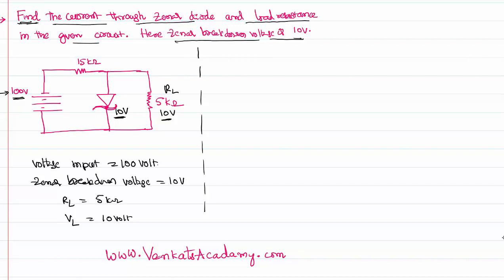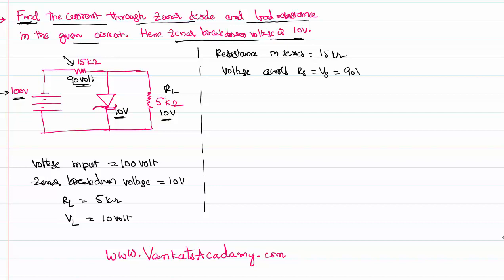There is a remaining voltage of 90 volts. That 90 volts will obviously pass through the series resistance. The resistance that is in series is 15 kilo ohms. The voltage across that series resistance RS is 90 volts, because out of 100 volts, 10 volts pass through the Zener diode and the remaining 90 volts pass through this series resistance.